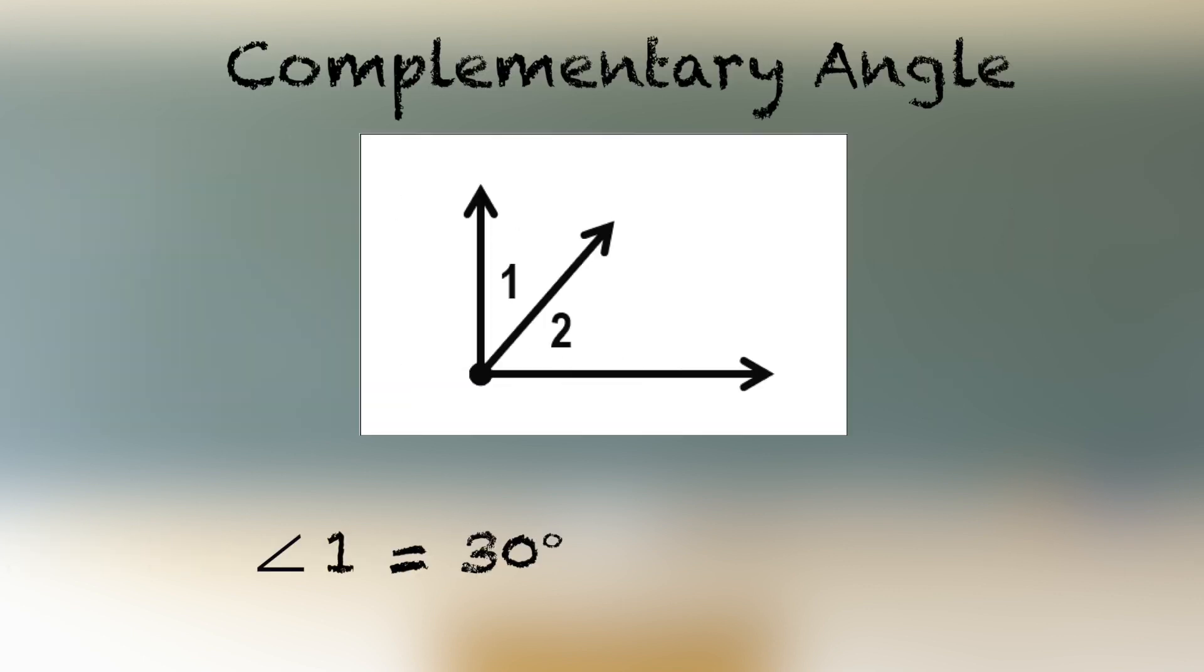Angle 1 equals 30 degrees, and angle 2 equals 60 degrees. 30 degrees plus 60 degrees equals 90 degrees. So angle 1 is complementary to angle 2.